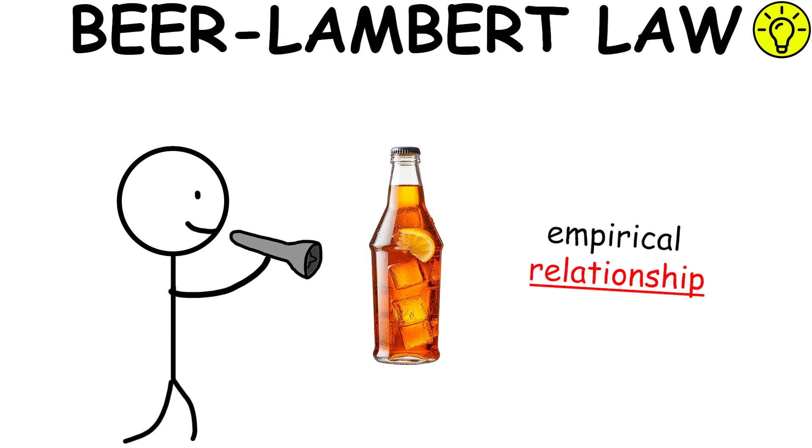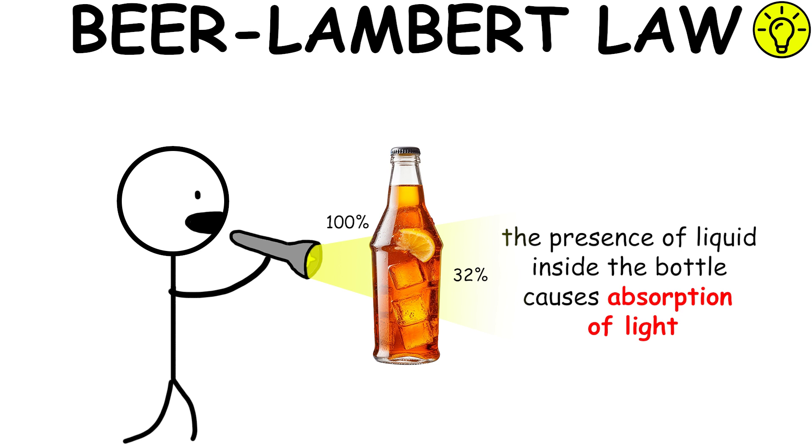Beer-Lambert Law is an empirical relationship that correlates the quantity of light absorbed by a material to the concentration and thickness of the material itself.